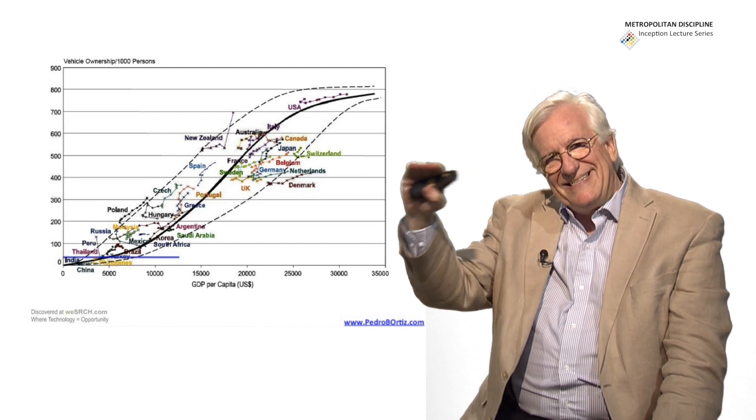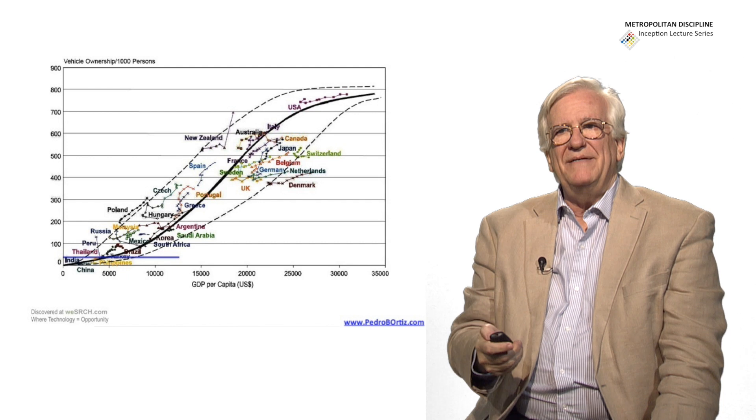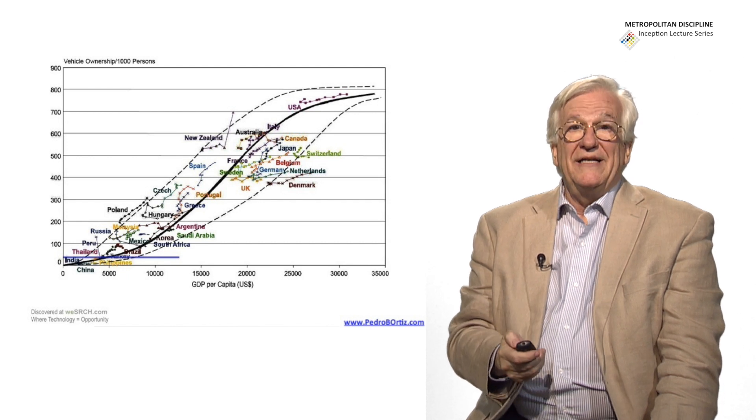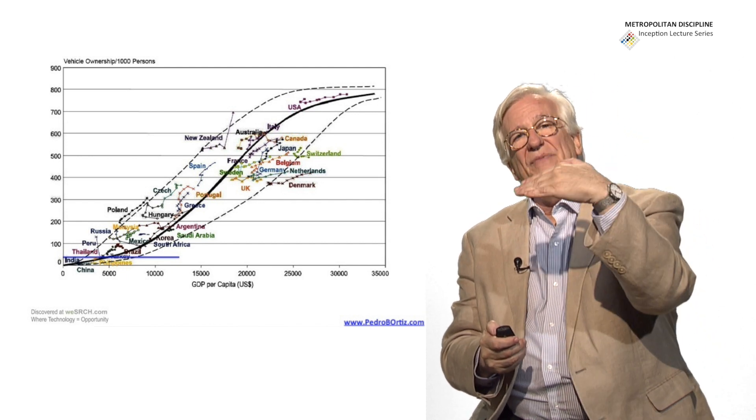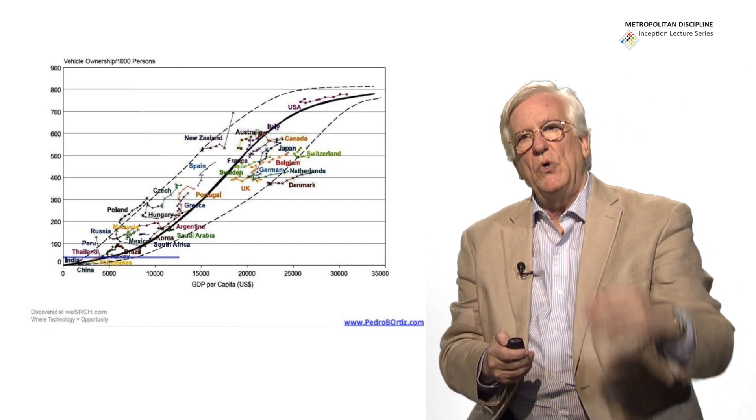And so we see that this is an asymptote curve, a sigmoid. And we must realize that there is a limit, a saturation, and it doesn't go growing forever.